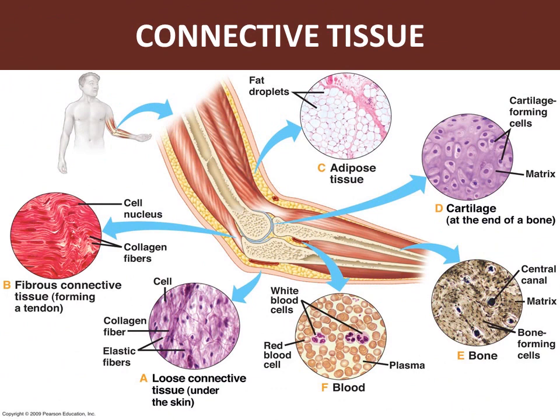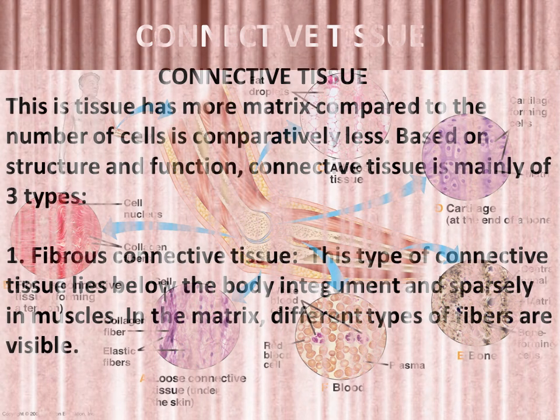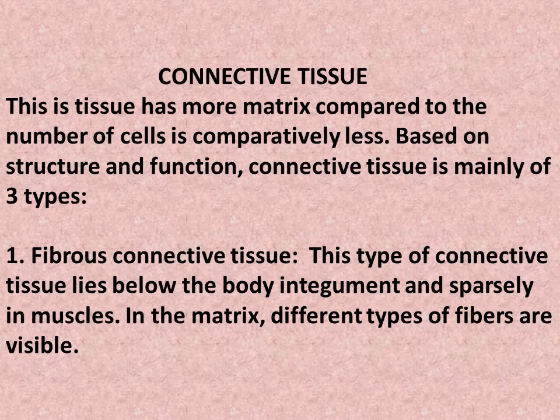This is a diagram of connective tissue. Connective tissue has more matrix compared to cells, which are comparatively fewer in number. Based on structure and function, connective tissue is mainly of three types. 1. Fibrous connective tissue: this type lies below the body integument and sparsely in muscles. In the matrix, different types of fibers are visible.